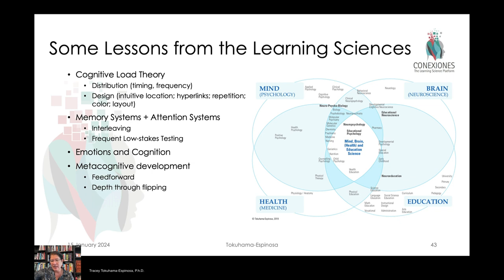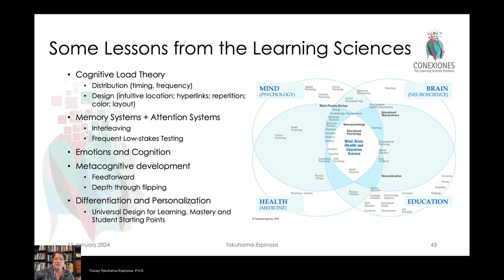We also encourage getting to deeper thinking using flipping as a classroom instrument. This idea of differentiation and personalization means creating a universal design for learning structure where you can personalize everybody's homework. In our course, we do this through bundles where students get to choose what level and entry point of information they want from the different resources available. This allows students to fill in their own gaps of prior knowledge so that they can all reach the same objectives in the classroom.